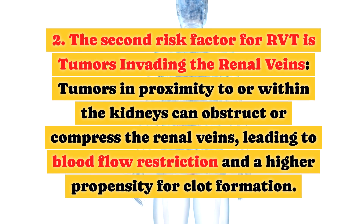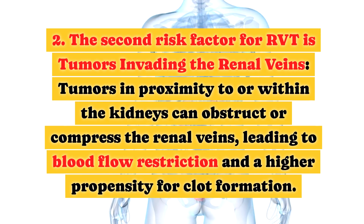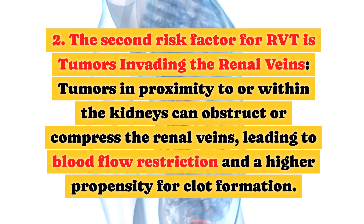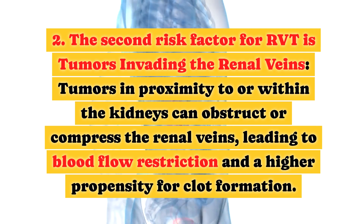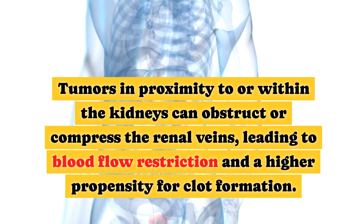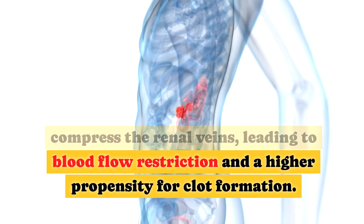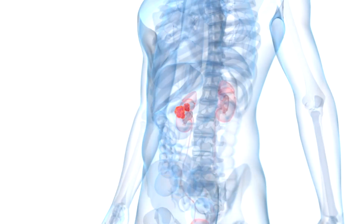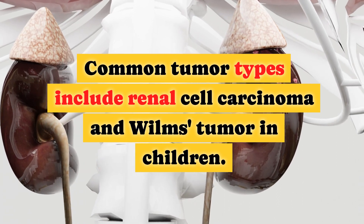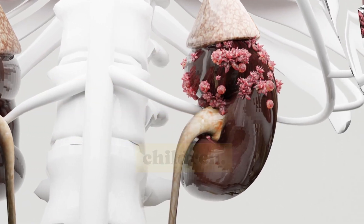2. The second risk factor for RVT is tumors invading the renal veins. Tumors in proximity to or within the kidneys can obstruct or compress the renal veins, leading to blood flow restriction and a higher propensity for clot formation. Common tumor types include renal cell carcinoma and Wilms tumor in children.